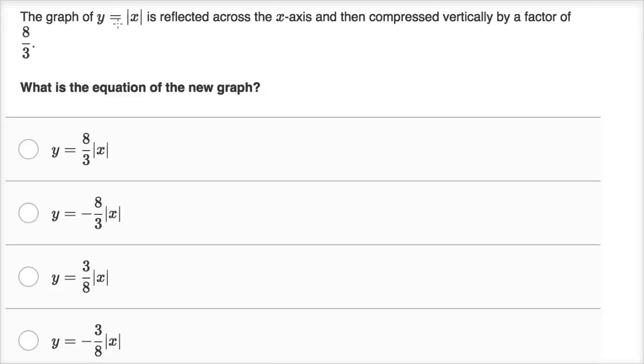The graph of y equals the absolute value of x is reflected across the x-axis and then compressed vertically by a factor of 8 thirds. What is the equation of the new graph?